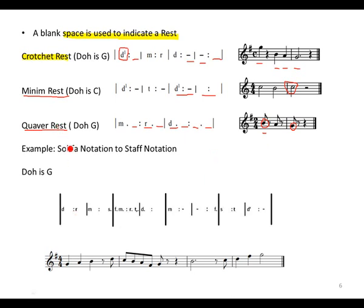Below, we have an example where we took Sol-fa notation and converted it into staff notation. Remember, when they say Do is G, then it means the piece is in the G major key. We can understand that. Remember, the crotchet is divided by a colon. There's our colon over there. So the first crotchet, there it is. It's a Do. And the second crotchet is a Re. Third one, Mi. Colon.